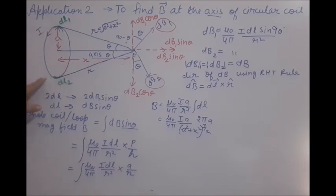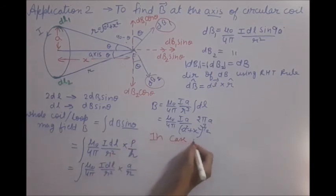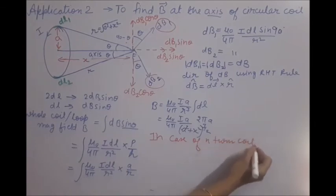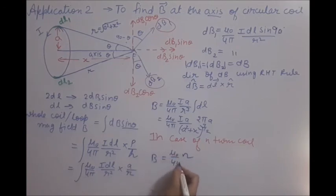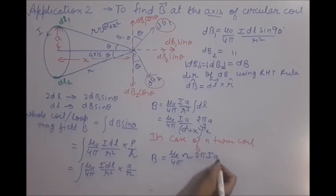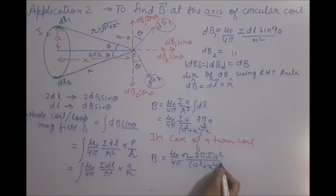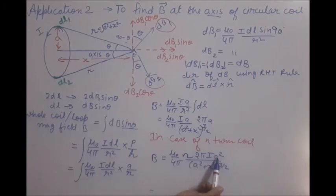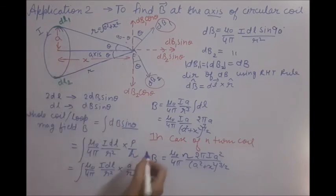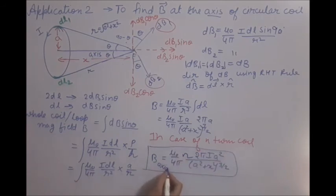This answer was for a single-turn coil. If the coil has N turns, we simply multiply by N: B = (μ₀/4π) × (2πN I a²) / (a² + x²)^(3/2). This can also be written in terms of the area of the coil since πa² is the area. Remember this formula for the axial magnetic field of a coil.